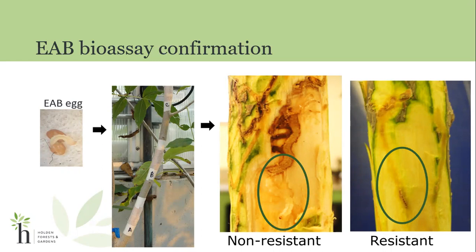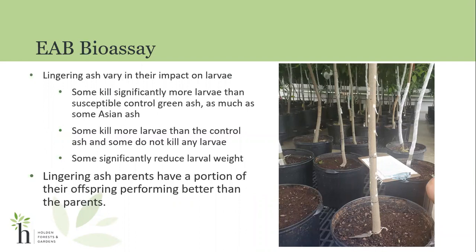This is a lot of work for the research lab at the Northern Research Station. They have multiple eggs attached to each of the clones. As you can see in this picture, there are multiple little white pieces of paper on the tree that add enough EAB stress to the tree to understand what kind of response it will have to the EAB larvae. All of these trees seen in the picture are just a portion of what they go through each year in quantifying the resistance of different lingering ash trees to EAB.